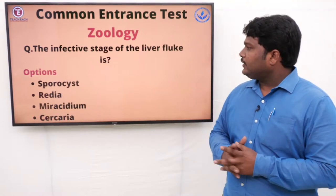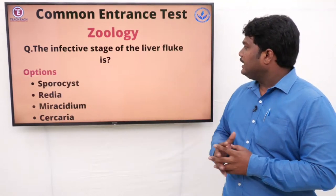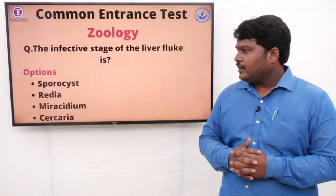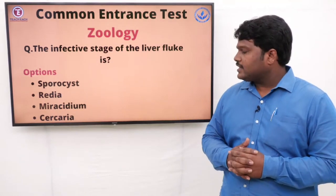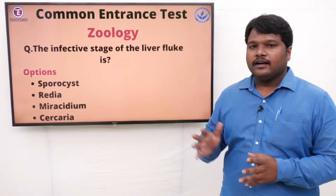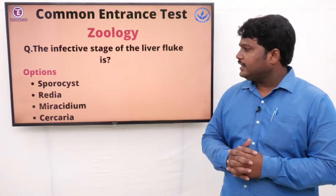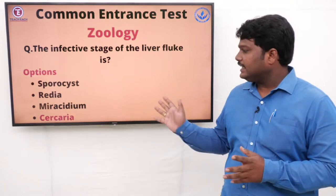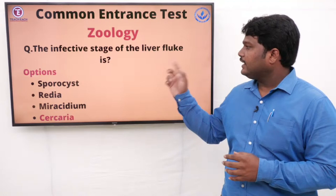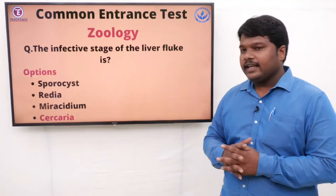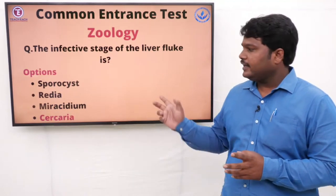Question 21: The infective stage of the liver fluke is. Options: A) Sporocyst, B) Redia, C) Metacercaria, D) Cercaria. The right answer is Cercaria. The infective stage of the liver fluke is Cercaria.